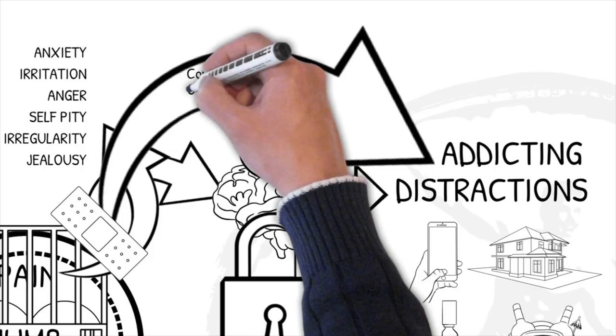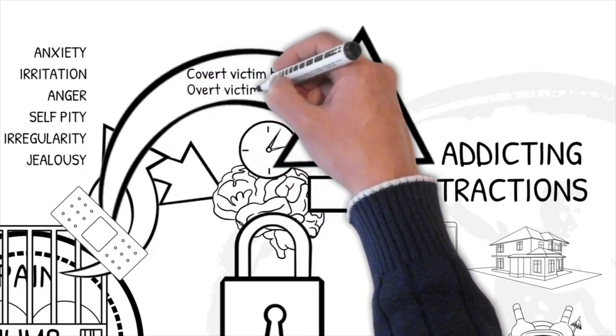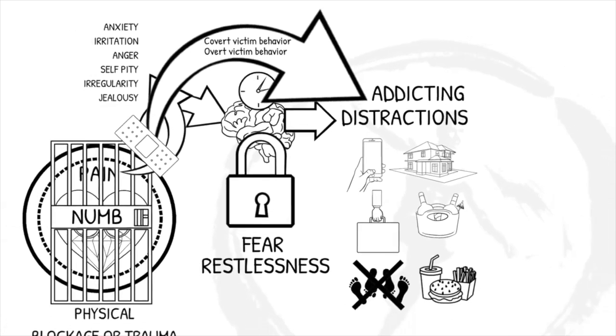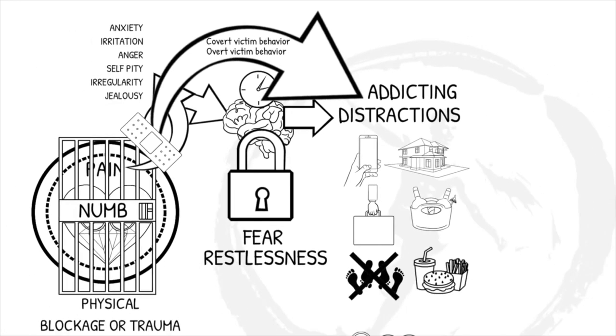Or overt victim behavior, like actual physical aggression. Both covert and overt victim behavior is intended as a big distraction, to not be confronted with our own unsolved issues and responsibility anymore. This imprisoning, numbing rat race of hunting for distractions that never can bring us a feeling of fulfillment or worthiness is extremely exhausting.